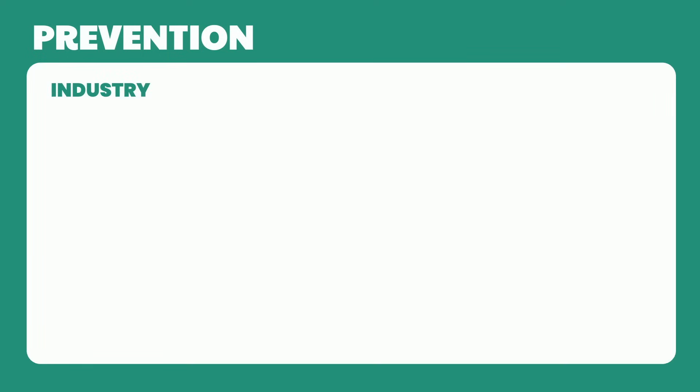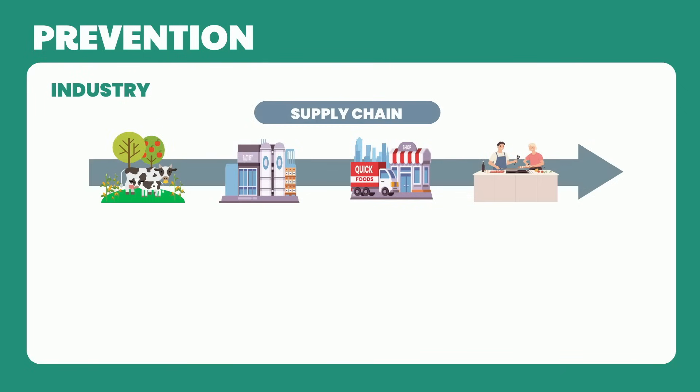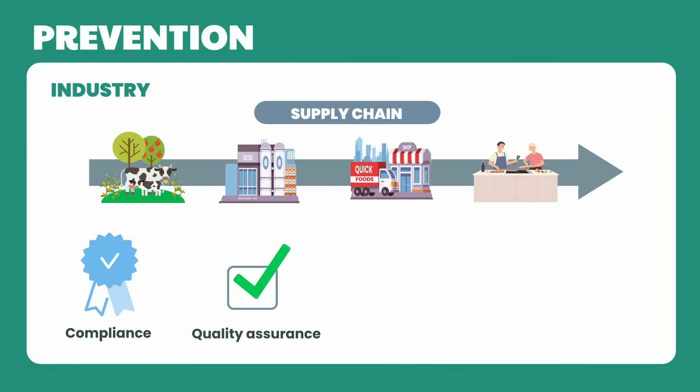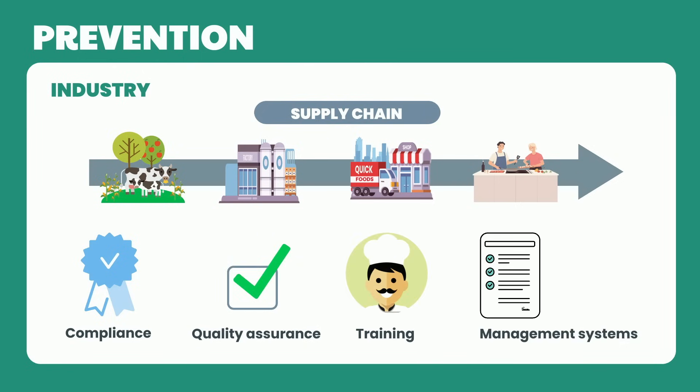Industry has a crucial role in ensuring food safety at all stages of the supply chain. These include compliance with food safety legislation, regulations, and standards, having robust quality assurance programs, staff training, and having food safety management systems like HACCP — Hazard Analysis and Critical Control Point — which can be used to identify and control potential food hazards.